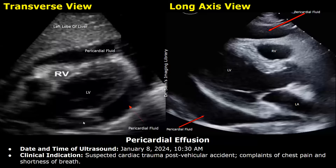It is important to write the time of ultrasound — it is very important to include this in a FAST scan report. The date is January 8, 2024, and the time of scan is 10:30 AM. Clinical indication: suspected cardiac trauma post vehicular accident, with complaints of chest pain and shortness of breath.